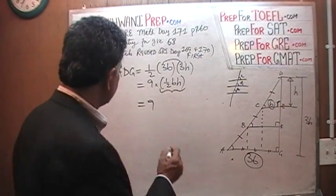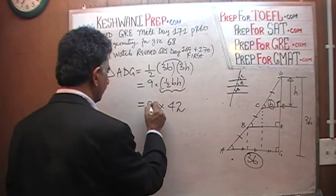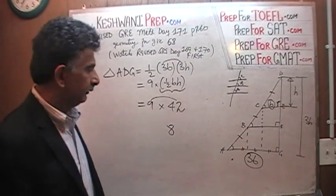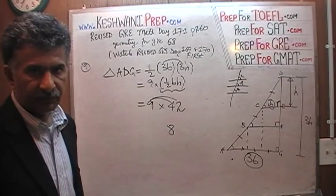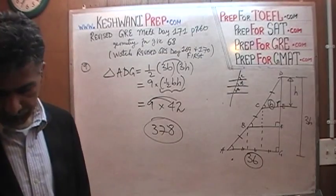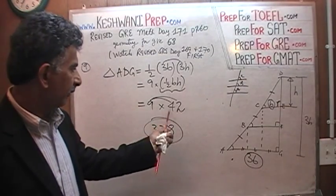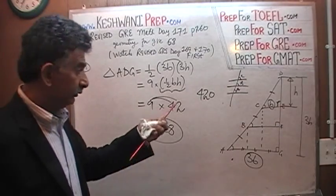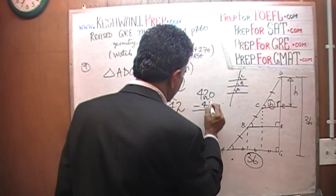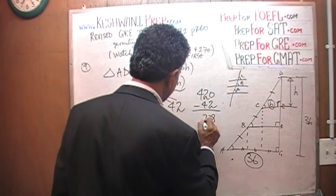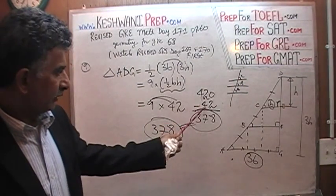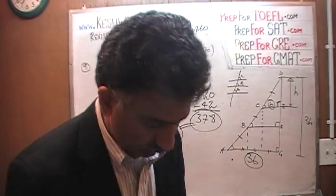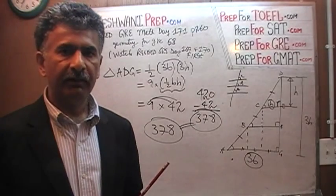That quantity — one-half base times height — is just the area of the small triangle CDE, which is 42. So the area of ADG equals 9 times 42. To compute: 9 times 42 = 378. You can verify this as 9 × 40 = 360 plus 9 × 2 = 18, giving 378. Alternatively, 10 × 42 = 420, minus 1 × 42 = 42, gives 378. The area of the largest triangle is 9 times the area of the smallest triangle.